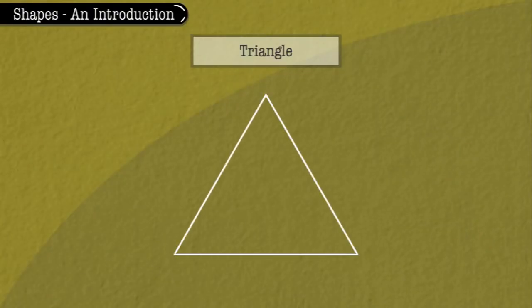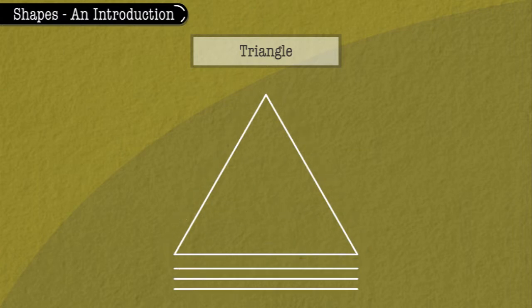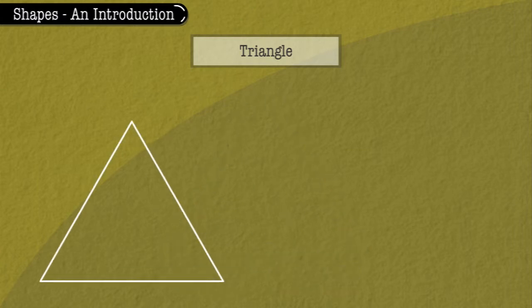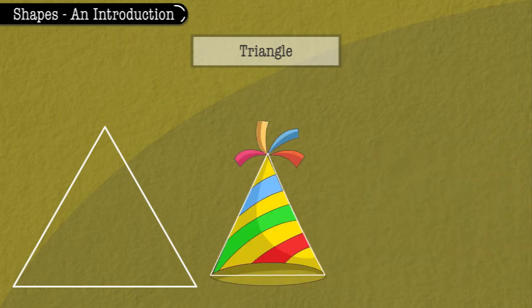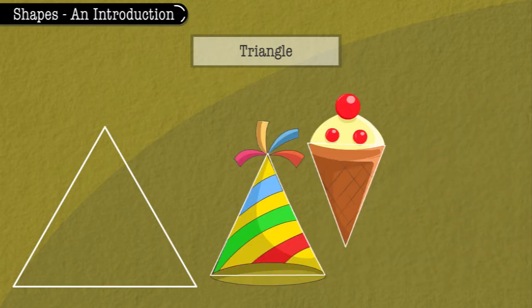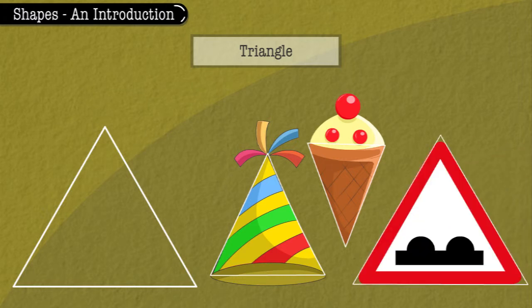Triangle. This shape is a triangle. It has three equal sides. A birthday cap, an ice cream cone, a traffic signal, etc. have the shape of a triangle.